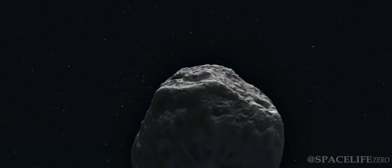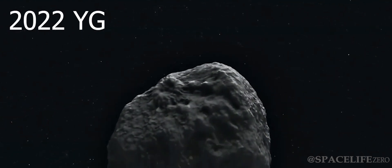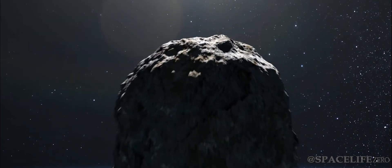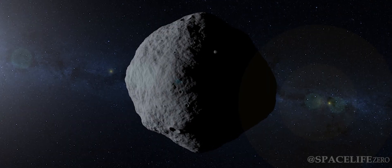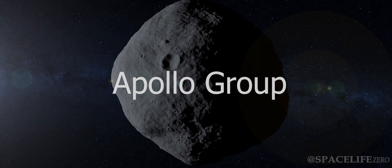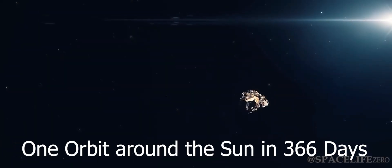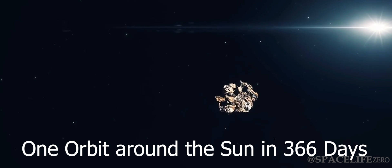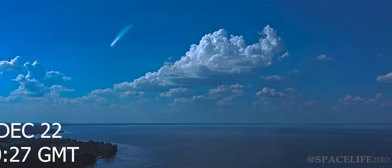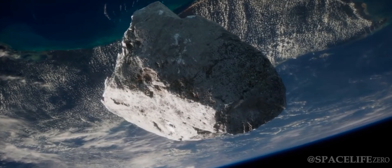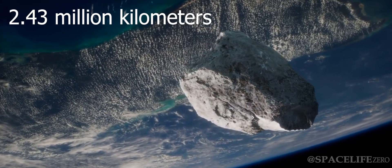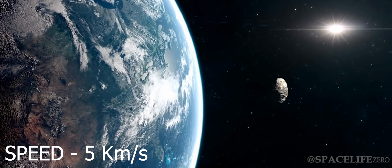The first asteroid is Asteroid 2022 YG. It was discovered on December 15, 2022, and it belongs to the Apollo Group. It takes about 366 days to complete one orbit around the Sun. On December 22, at 1027 GMT, it will fly past Earth at a close distance of 2.43 million kilometers, at a whooping speed of 5 kilometers per second.